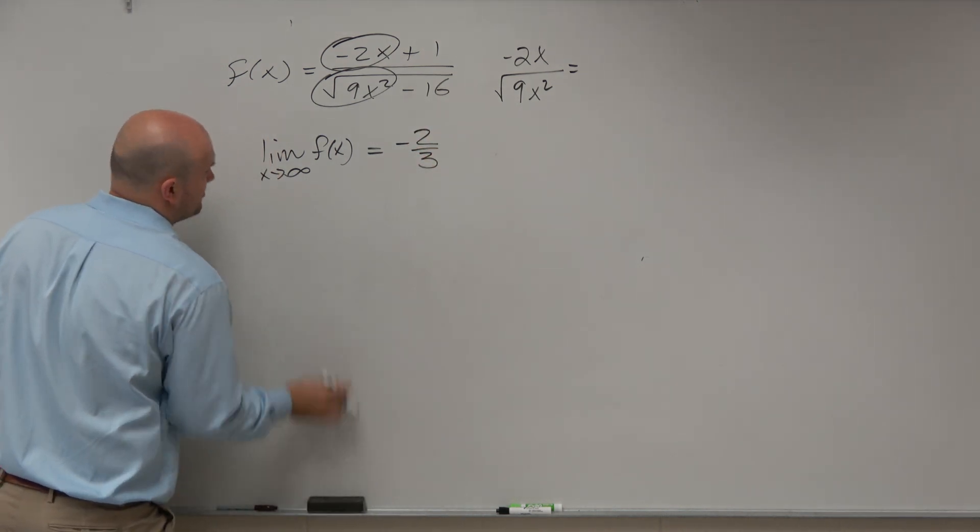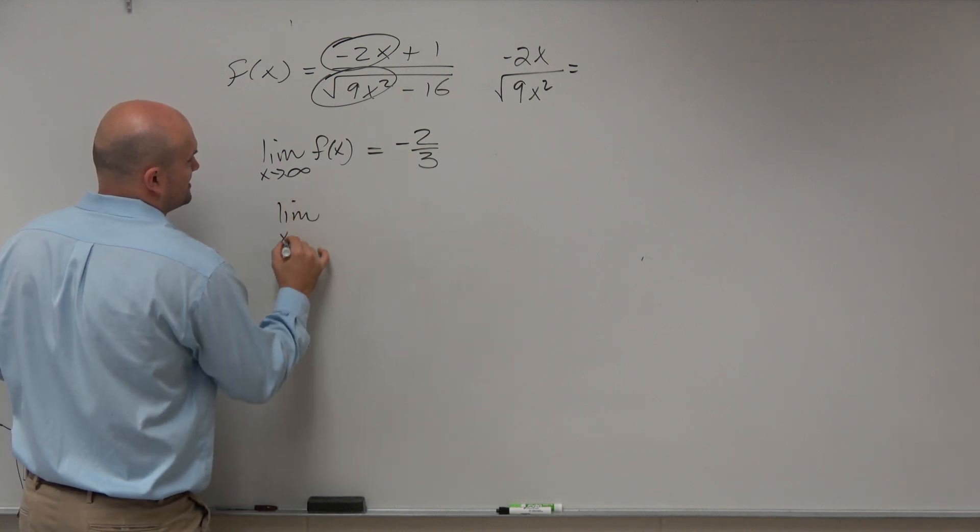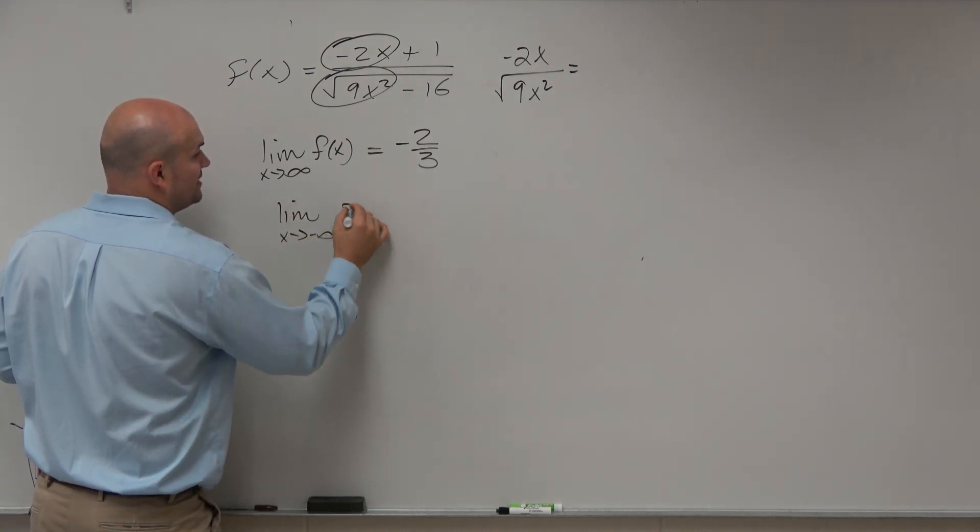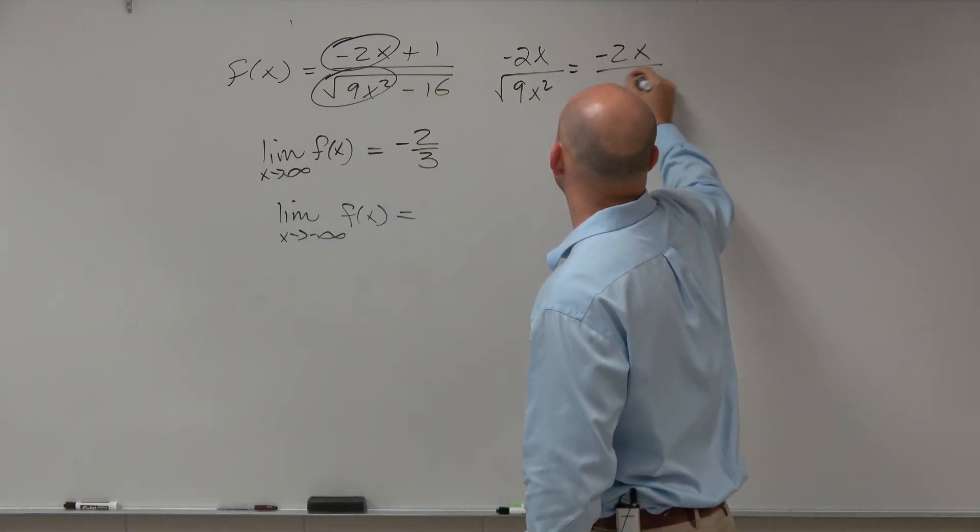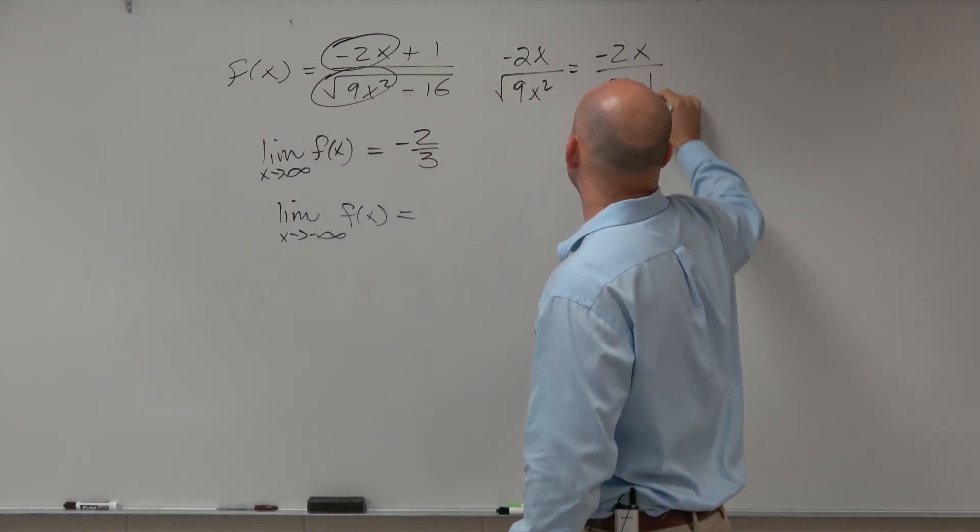And if I wanted to go ahead and approach limit as x approaches negative infinity of f of x, again, we're looking at the same thing. Negative 2x over 3 absolute value of x.